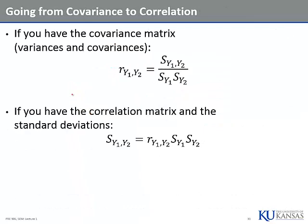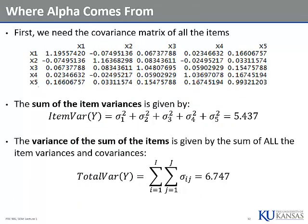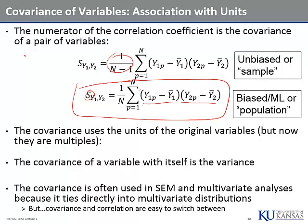Covariance has units — it'll be a number. For example, the covariance of variable x1 with x2 is negative 0.074. That number looks like a correlation, but it may have really crazy units — units of variable x1 times units of variable x2. It's like Likert units one times Likert units two — a weird combination. Covariance shows up all the time in SEM, and it's literally part of the core of SEM. Correlation can be derived from it.